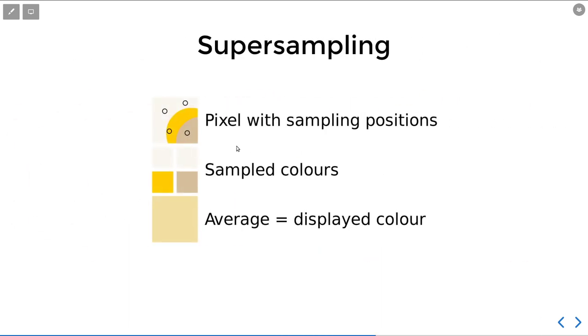What we will do is quite simple. We sample multiple points inside the pixel, we use the algorithm we already had to calculate the color for every sample, and then we average the color as a result.